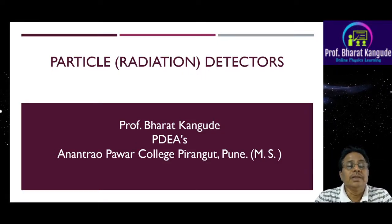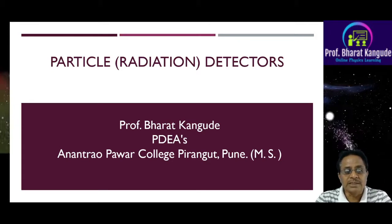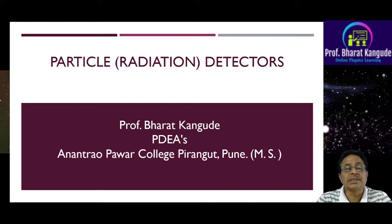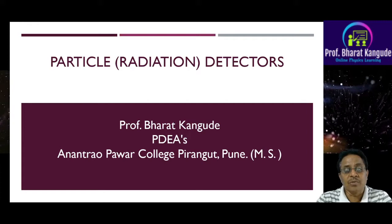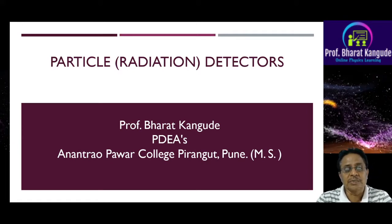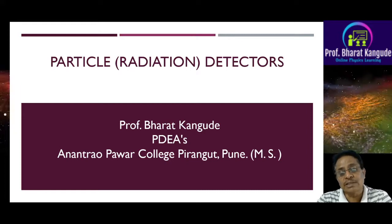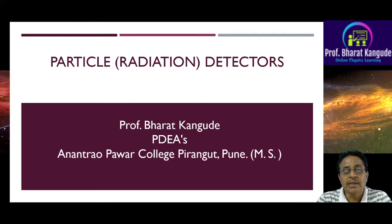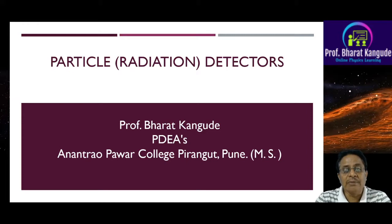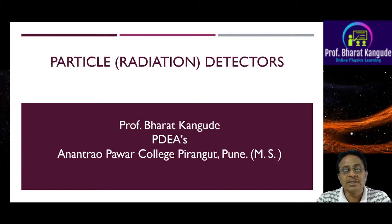In chapter four on particle accelerators and detectors, this is the last part titled particle or radiation detectors. Earlier we saw devices used to increase the energy of charged particles coming from nuclei — alpha, beta, and proton particles — which can be accelerated to carry out further nuclear reactions. In that process, large numbers of other particles are generated, and it is not easy to identify all of them.